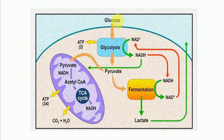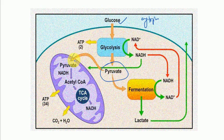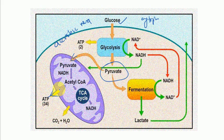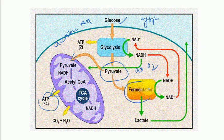Glucose in the cytoplasm undergoes glycolysis to produce pyruvate. This pyruvate enters the mitochondria and undergoes aerobic respiration in the presence of oxygen, going through the electron transport chain to form ATP. In the absence of oxygen, pyruvate undergoes fermentation and produces lactate — this is lactic acid fermentation, an example of anaerobic respiration.